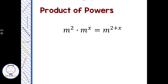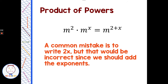So m squared times m to the x — we're multiplying and have the same base m, so we add 2 plus x. A common mistake is to write 2x, but we want to make sure we're not multiplying those exponents — we are adding. Multiply and have the same base, we add the exponent to get 2 plus x.